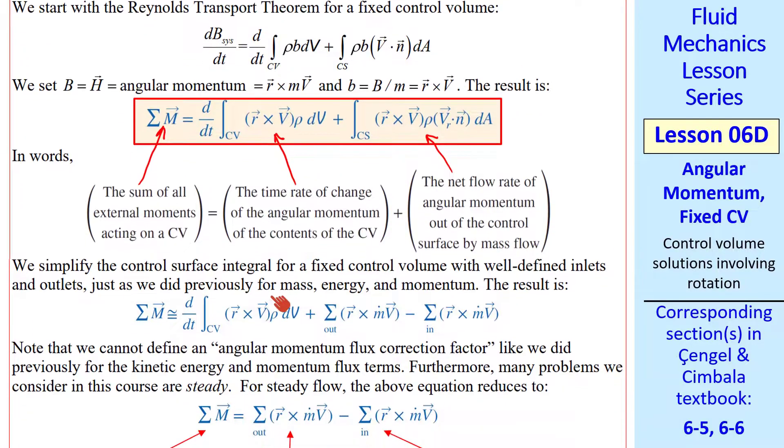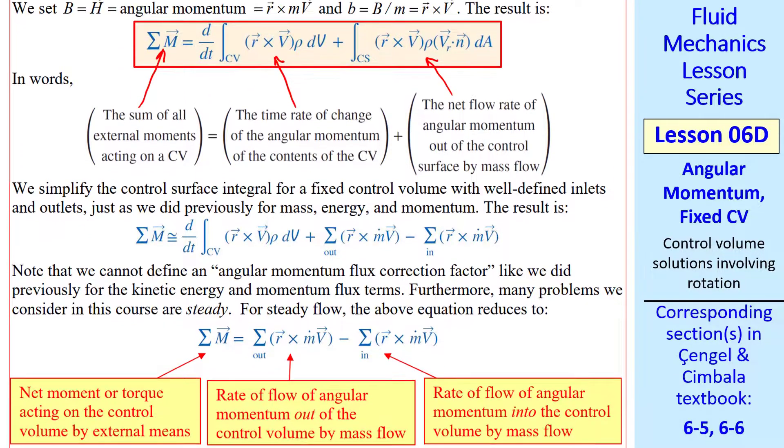As we did previously for mass, energy, and momentum, we simplify this term for well-defined inlets and outlets. I'll drop the subscript R, where we're also considering only fixed control volumes from now on. Here's the result. The second term is the same, but the third term here is written as summations over outlets minus inlets. As I've pointed out previously, the signs take care of themselves. At outlets V and N are nearly in the same direction, and therefore these are positive terms. And at inlets, they're negative terms.